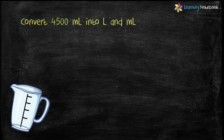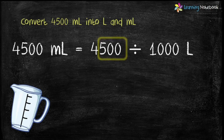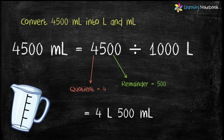Let's convert 4500 milliliter into liters and milliliters. We divide 4500 by 1000. From the chapter on division, on dividing by 1000, the digits at the ones, tens, and hundreds place become the remainder and the remaining digits become the quotient. So 500 is the remainder and 4 is the quotient. The answer is 4 liters 500 milliliter.